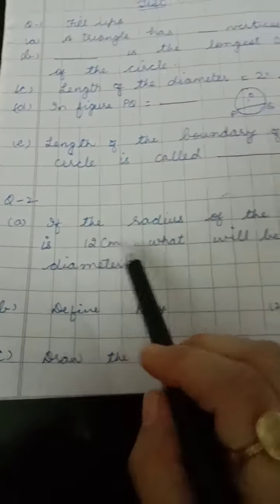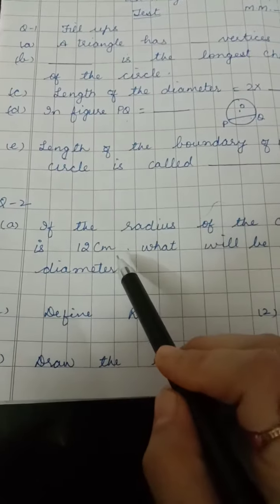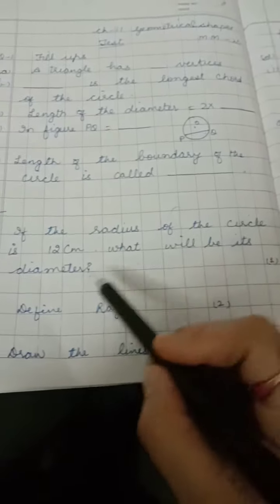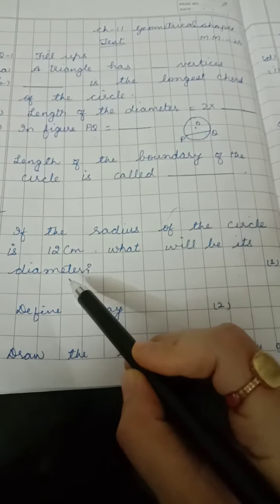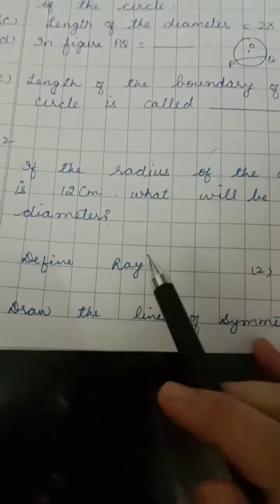Question number 2. If radius of the circle is 12 centimeter, what will be its diameter? Radius is given and you have to find out the diameter.